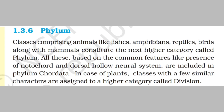The second highest rank is Phylum, also known as Division in the case of plants. Classes comprising animals like fishes, amphibians, reptiles, and birds along with mammals constitute the next higher category called Phylum. All these are based on common features like presence of notochord and dorsal hollow neural system, and are included in Phylum Chordata. In the case of plants, classes with a few similar characters are assigned to a higher category called Division.